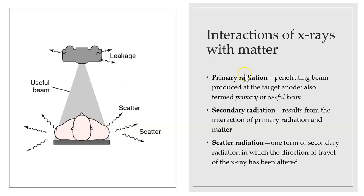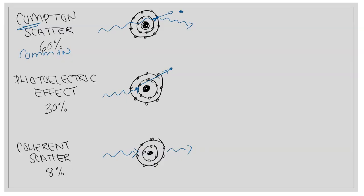With radiation, we have primary and secondary radiation. The useful radiation needed to get our image is primary radiation. Secondary radiation includes radiation we don't need — it's harmful and doesn't serve the imaging purpose. A type of secondary radiation is scatter radiation, where instead of going where we want it, the radiation goes elsewhere. This is why we wear a lead apron.